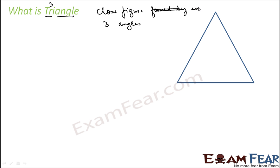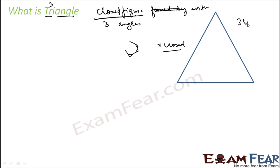It has to be a closed figure. For example, a figure with three angles that is not closed is not a triangle. So 'closed figure' is a critical term here. A triangle has three angles, three lines, and three vertices — and it must be a closed figure.